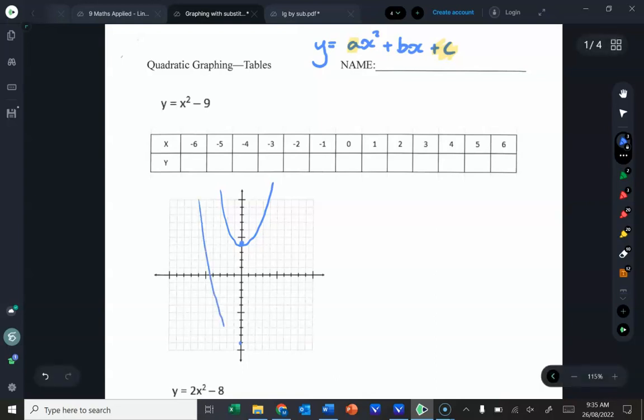But it can also mean, which we'll see in a second, that if the curve doesn't turn there, it still passes through there.